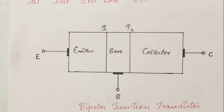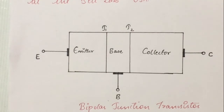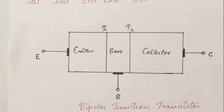Now we will see the doping levels of the emitter, collector, and base regions. The emitter has to provide charges for the current, so it should have the maximum amount of doping — it has maximum doping. The collector is collecting the charge carriers, so it is mediumly doped. The base has a low doping level in comparison to the emitter and collector.